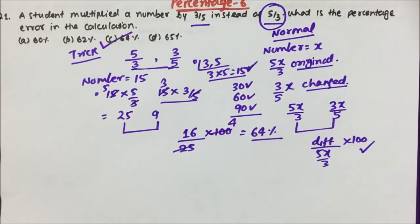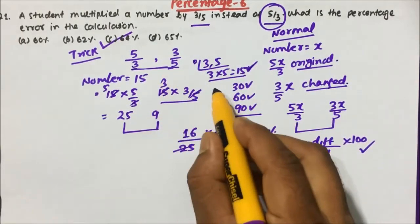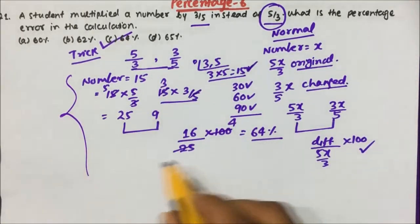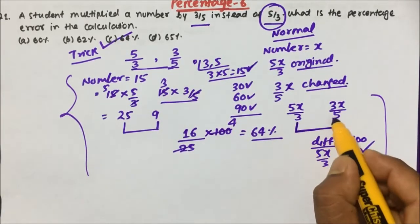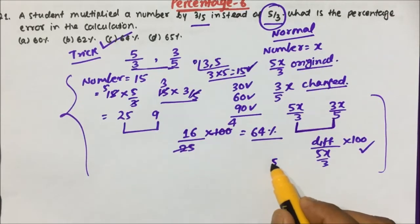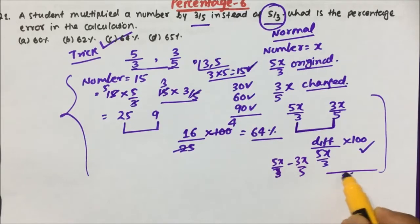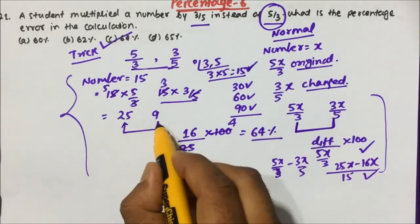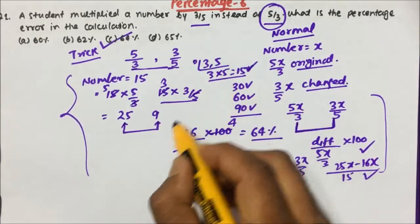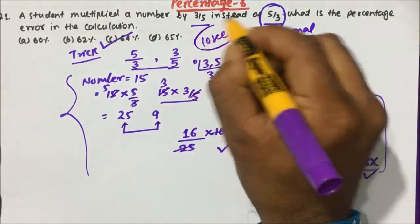If you assume a number divisible by both or take the LCM, the calculation becomes very easy — you don't have to subtract in terms of x. When subtracting in terms of x, you still have to take LCM and simplify 25x minus 16x anyway. By assuming a value, we can solve the question within 10 seconds.